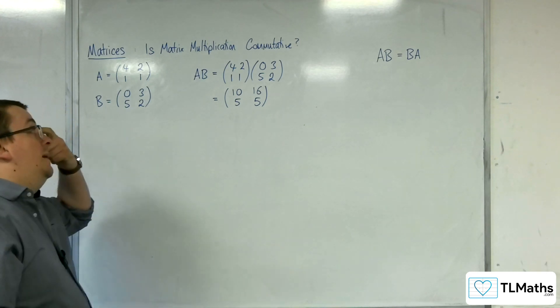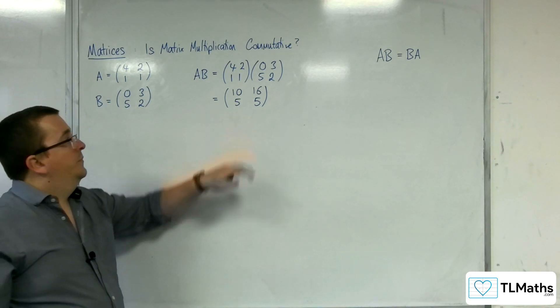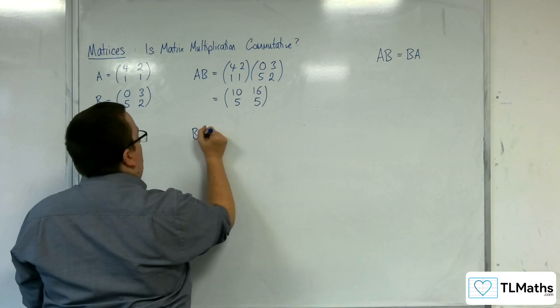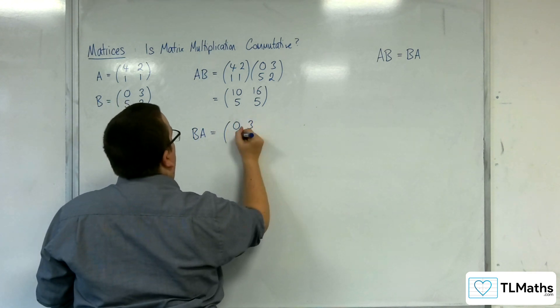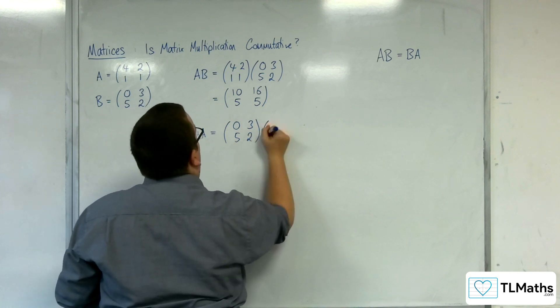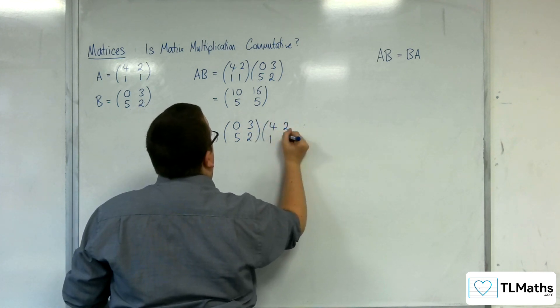So the next thing I want to do is have a look at BA. So that would be (0,3; 5,2) multiplied by (4,2; 1,1).